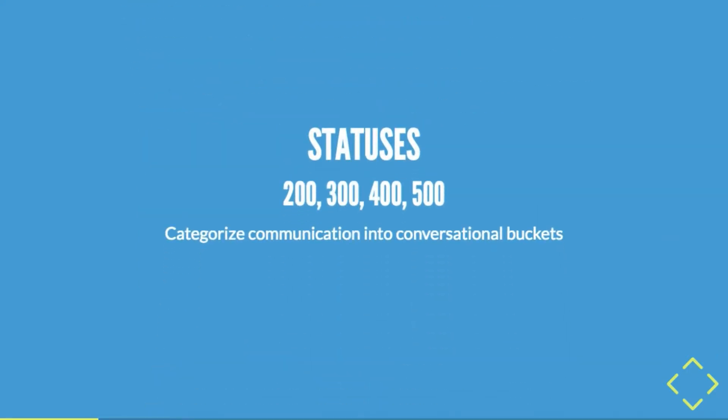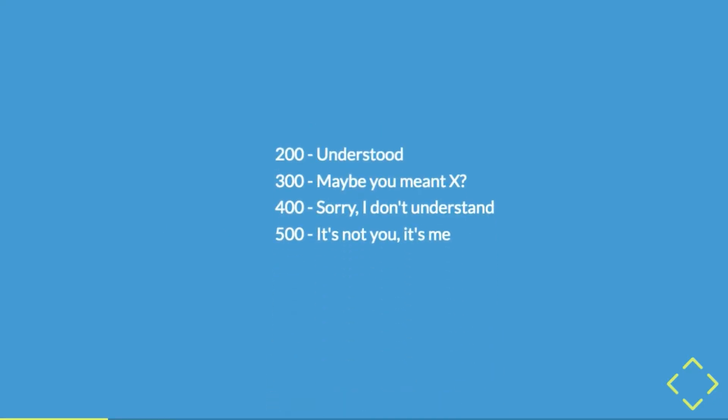200, 300, 400, 500 — you've seen them. They categorize communication. 203, 204, 205 further narrow the scope of what's being said. There's always a message that comes along with that status to further describe the response. 200 says 'understood.' 300 says 'maybe you wanted this thing.' 400 says 'I don't know what the hell you're talking about.' And 500 — it's not you, it's me.